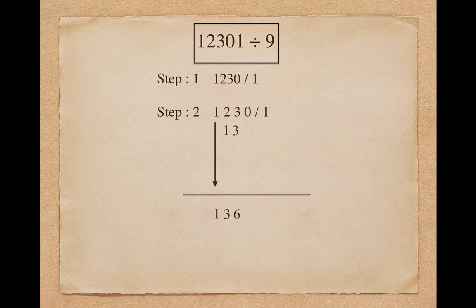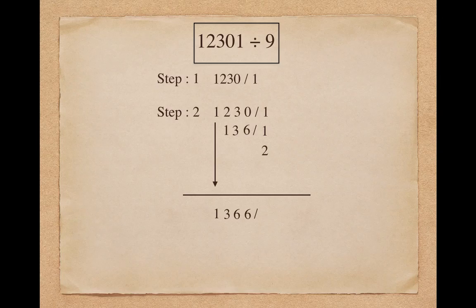To find the fourth digit of the quotient, make the summation of all the previous digits: 1 plus 2 plus 3 plus 0 makes 6. And to find the remainder, make the summation of all the digits of the dividend: 1 plus 1 plus 2 plus 3 plus 0 makes 7. So here the answer is quotient 1366 and remainder 7.